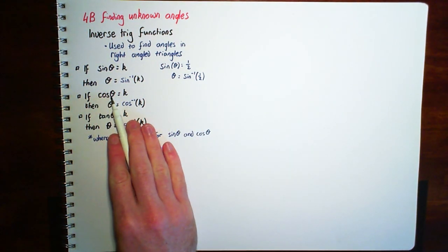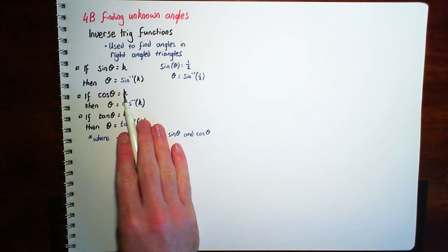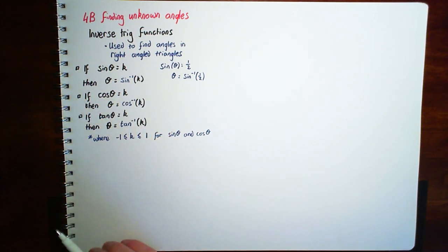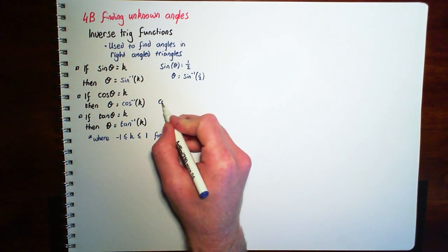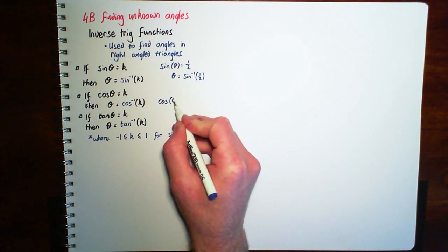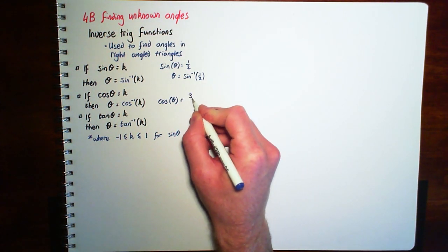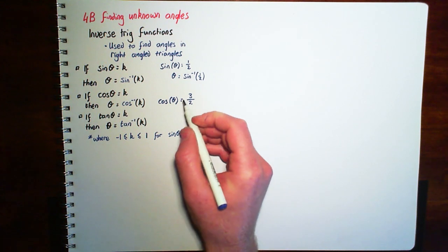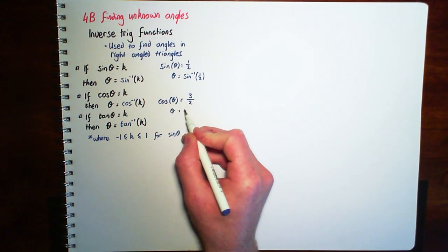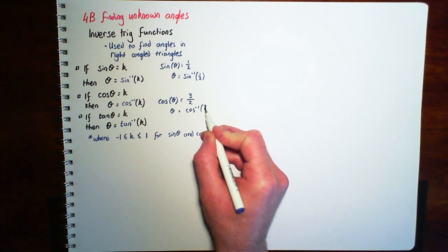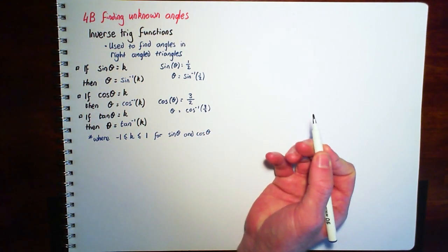Similarly, if we've got cos of theta equals some number k, then theta is going to be the inverse of cos of that number. So if cos of theta equals three over two, then theta is going to be cos the inverse of 3 over 2 for example.